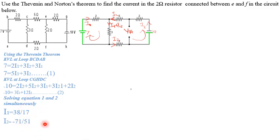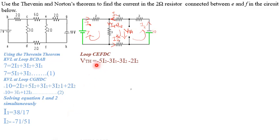We now write a loop equation to find VTH. VTH is defined in the clockwise direction, and all the currents I2 are going against the direction of VTH, so: VTH = −5·I2 − 3·I1. Simplifying the equation gives VTH = −10·I2 − 3·I1. Substituting the values of I1 and I2 found previously, we calculate VTH = 7.2157 volts.